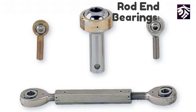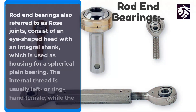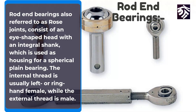Rod end bearings — also referred to as rose joints — consist of an eye-shaped head with an integral shank, which is used as a housing for a spherical plane bearing. The internal thread is usually left-hand female, while the external thread is male.